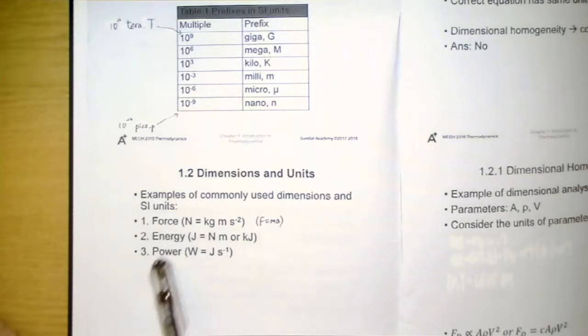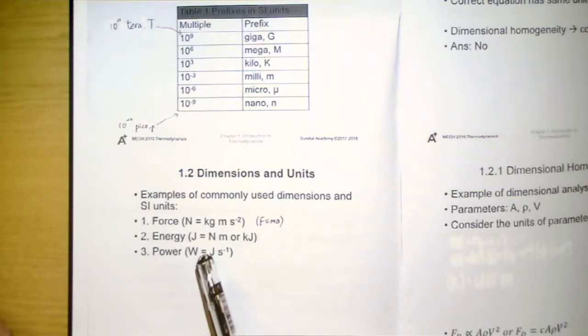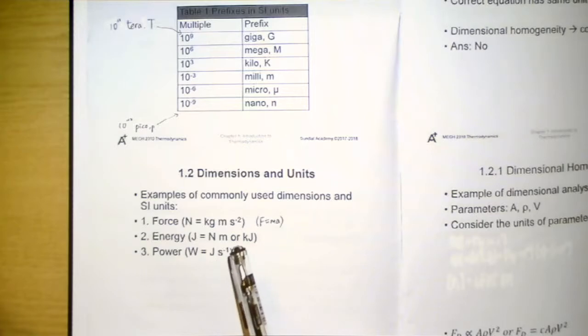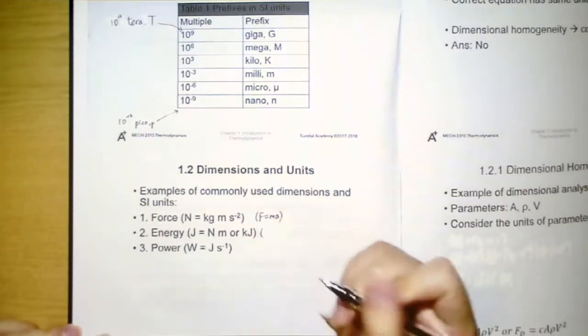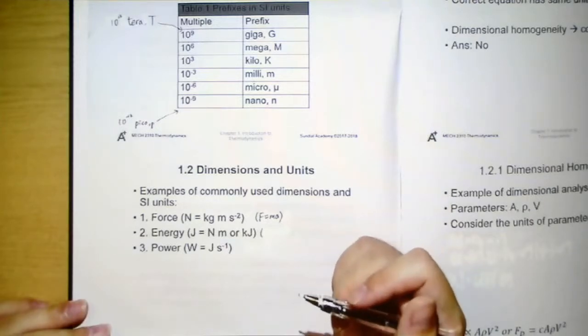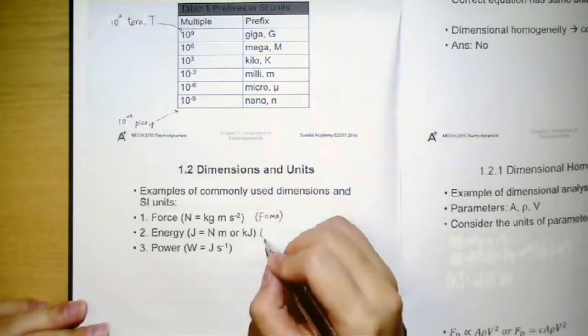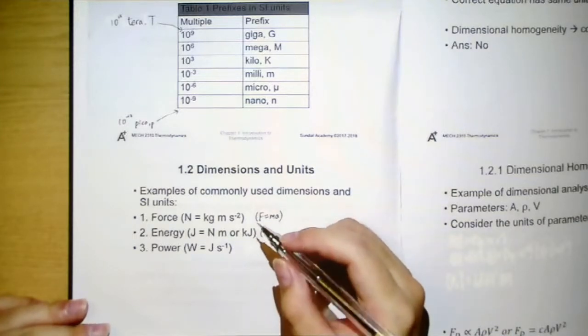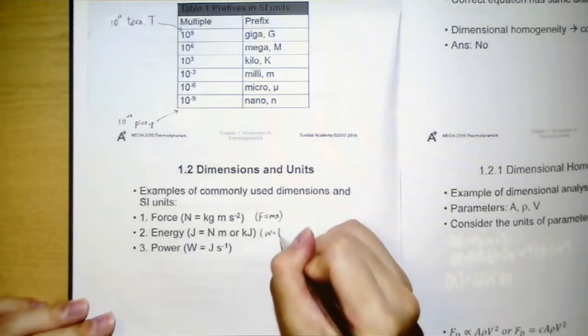And the second one is energy. Its SI unit is joule, which is equal to Newton per meter. Or sometimes we will also use kilojoules to represent energy, because one joule is actually very small. In order to memorize this, we will also have the relationship of work you have learned in elementary mechanics, that work equal to force times displacement. Force is Newton, while displacement would be meter.